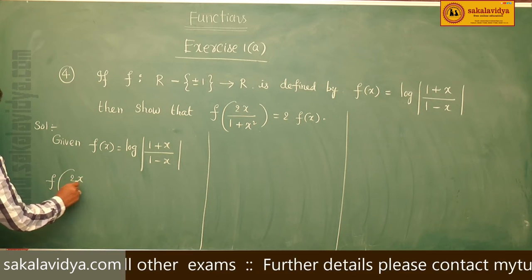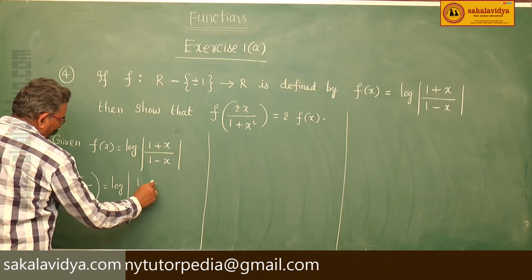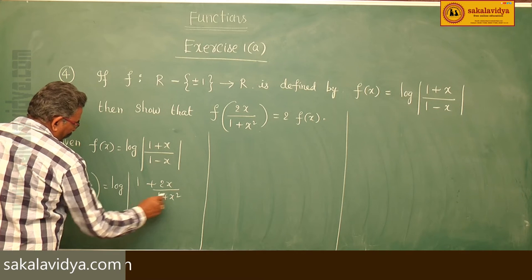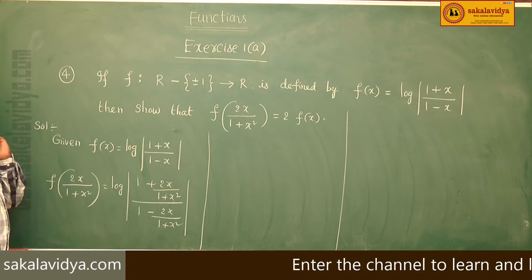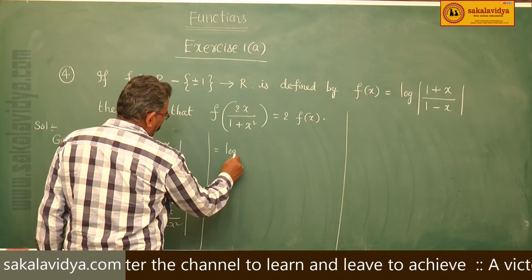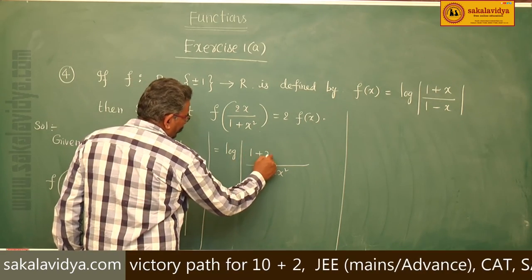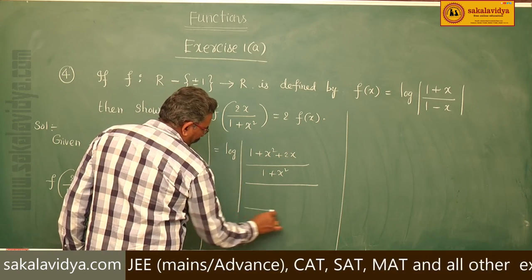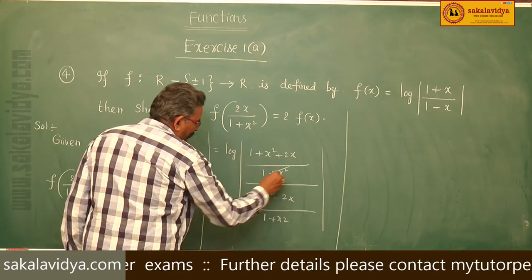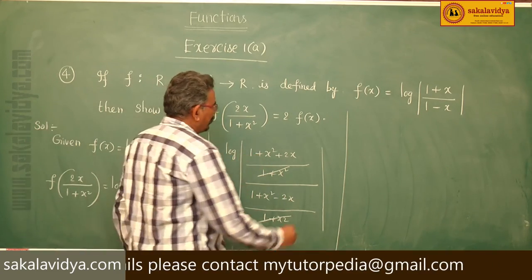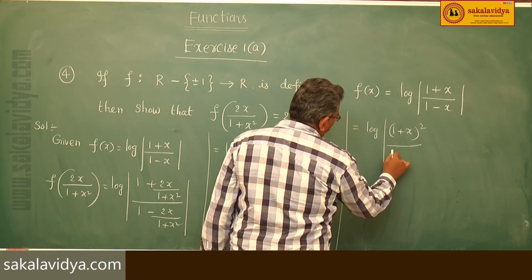f(2x / (1 + x²)) = log| (1 + 2x/(1 + x²)) / (1 - 2x/(1 + x²)) |. Taking LCM as (1 + x²), this becomes log| (1 + x² + 2x) / (1 + x² - 2x) |.